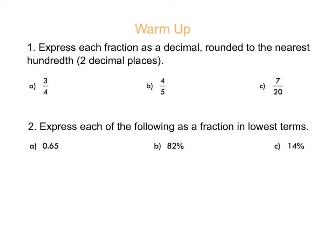A big part of doing probability calculations involves being familiar with fractions, decimals, and percents, and being able to convert between the forms. If you're given a fraction and you want a decimal, that's the easiest — you can do that all on your calculator. For example, 3 over 4 as a decimal: just do 3 divided by 4, and your calculator gives you 0.75. That's already to two decimals, so no rounding needed. Same thing with 4 fifths: divide by 5 and you get 0.8, or 0.80 to two decimal places.